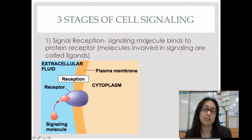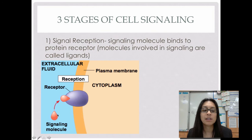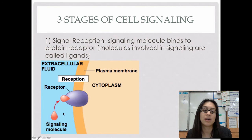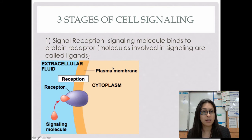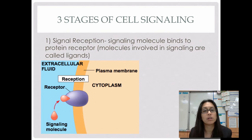There are three stages in cell communication. The first stage is signal reception — when the signaling molecule actually binds to the protein receptor. Communication doesn't start until the signaling molecule binds to the protein receptor. Signaling molecules can also be called chemical messengers or ligands. Any molecule that can go to a target cell and bind to a protein receptor is often referred to as a ligand.